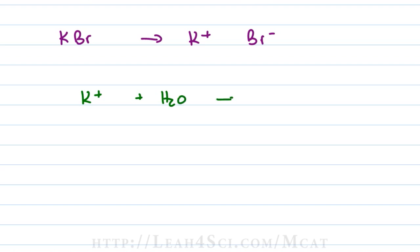If K+ reacted with water, we would get KOH plus H+. That's because the water broke apart to give me an OH- and an H+. The problem is that KOH is a strong base and the reaction will actually favor the reactants, the K+ and H2O which means that K+ is neutral in solution because it's not strong enough to abstract hydroxide from a water molecule.